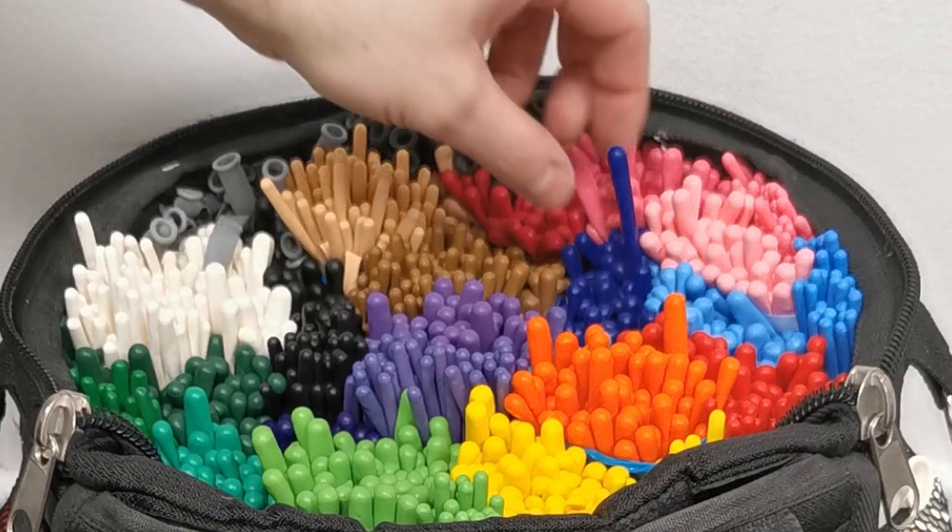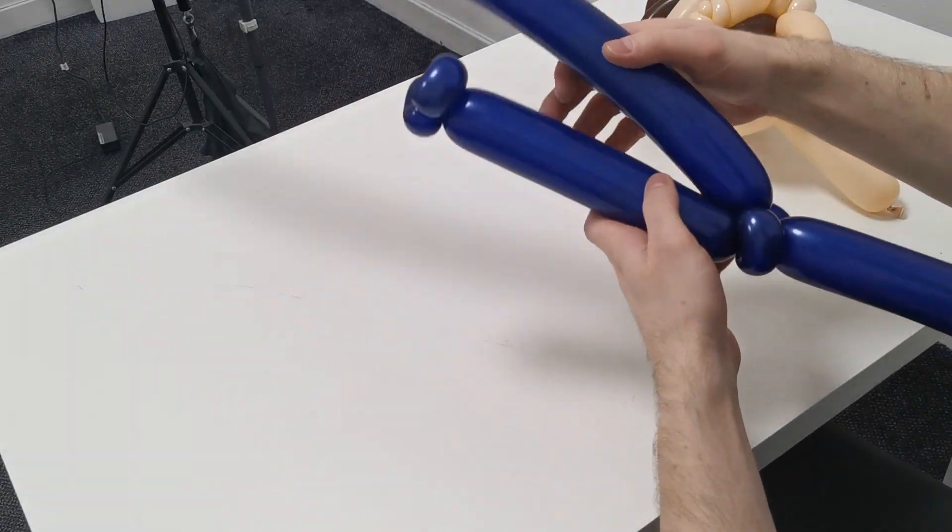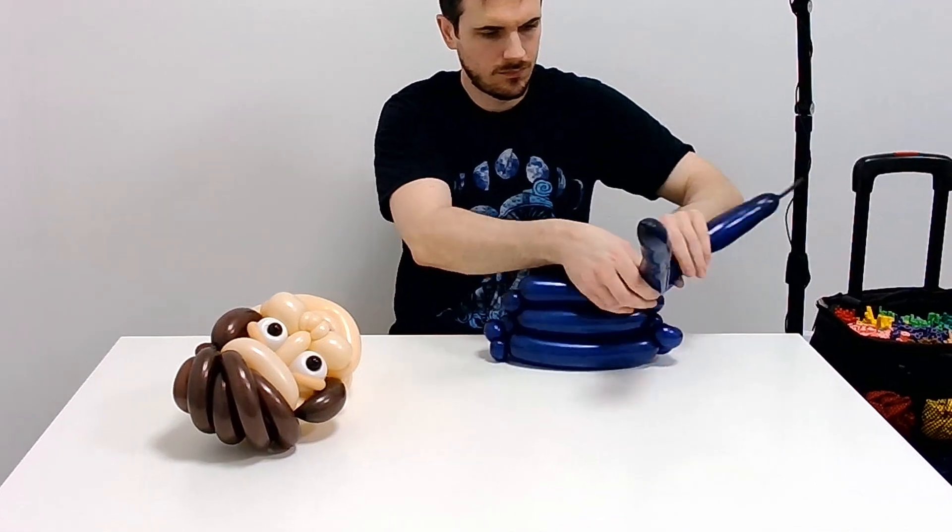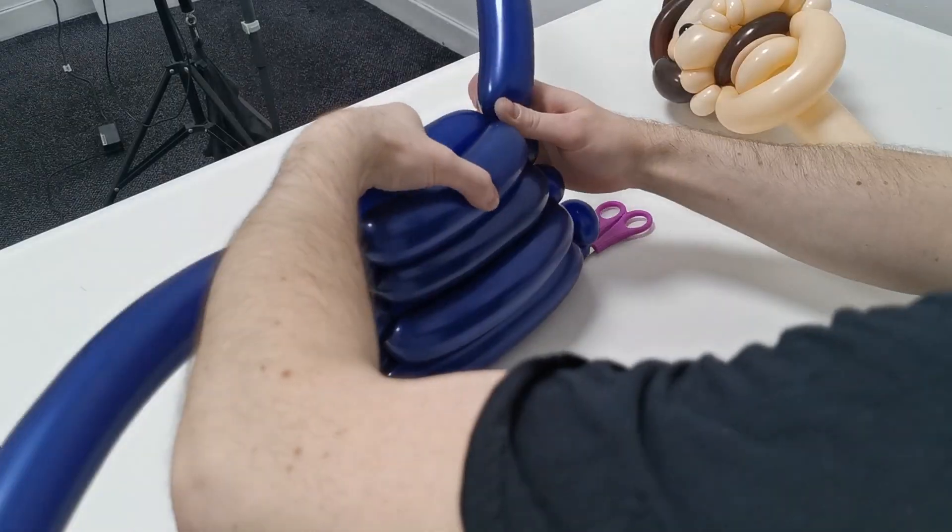So continuing on with the body. We're gonna use a navy blue to make his jumper. And we just do that by weaving a couple of balloons back and forth to get a torso shape.